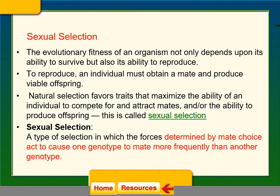Sexual selection occurs when evolutionary fitness depends not only on the ability to survive, but also on the ability to reproduce. To reproduce, an individual must obtain a mate and produce viable offspring. Natural selection favors traits that maximize the ability to compete for and attract mates. Sexual selection is a type of natural selection in which outcomes are determined by mate choice.